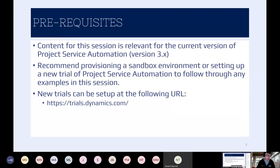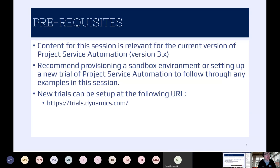So you've decided PSA is the system for you — what do you need first? You need a current version of the application — version three. If you're spinning up a new Project Service Automation instance today, it will be version three. If you've got something sticking around from a few years back, you might need to check and upgrade to version three. The recommendation is to set up a sandbox or a trial and work through it in an isolated environment. Don't let this touch your production environment until you're happy. You can also set up free 90-day trials and just experiment further.